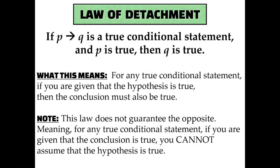So let's go ahead and talk about the law of detachment. It says that if 'P then Q' is a true conditional statement, and if you're given that P is true, then Q must be true. Basically, if you have a conditional statement that says 'if something then something,' and you're also given in a different context that the hypothesis is true, then you can use that conditional statement to conclude that Q has to be true.